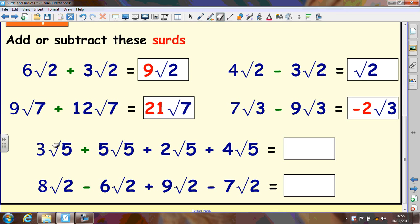And then we've got these big long ones at the end. So we've got 3, 5, 2 and 4 at the front. 3 plus 5 plus 2 plus 4, that's 14 root 5. And we've got 8 root 2 take away 6 root 2. That's now 2 root 2. Then we add 9 to that. We've got 11 root 2 and then we take away 7 and that leaves 4 root 2.